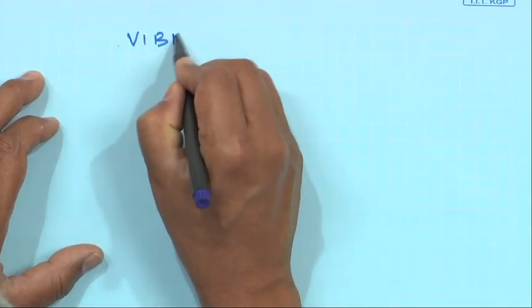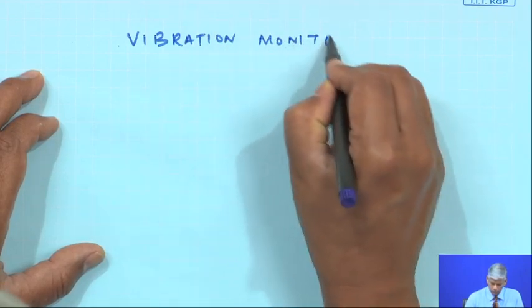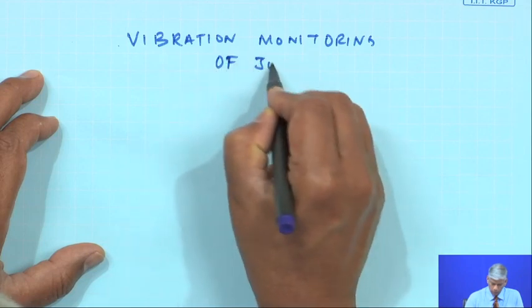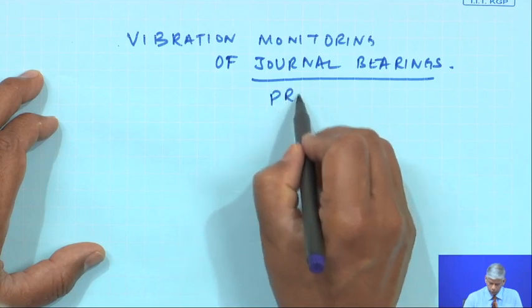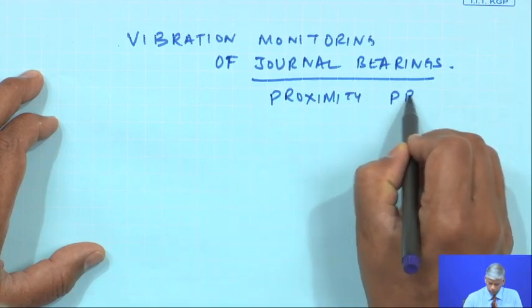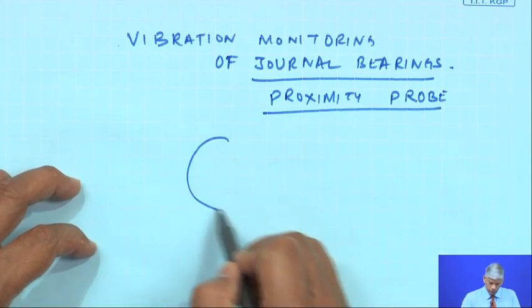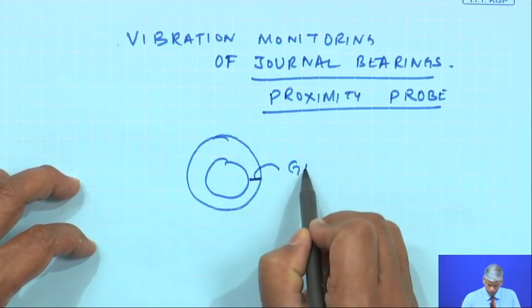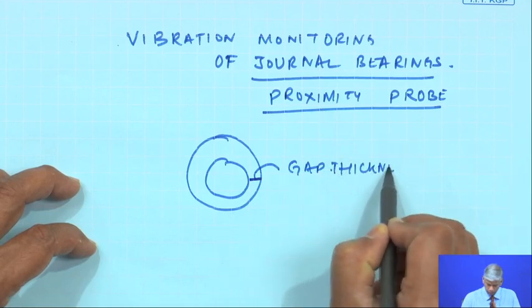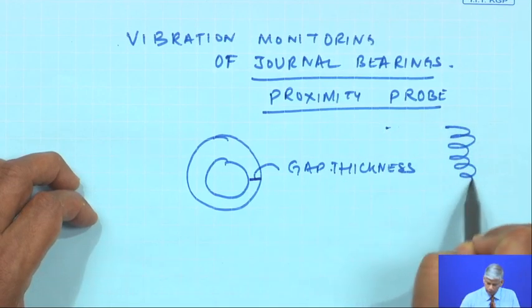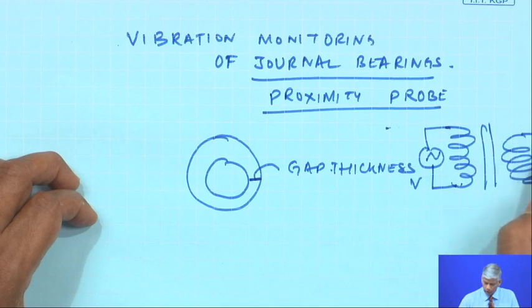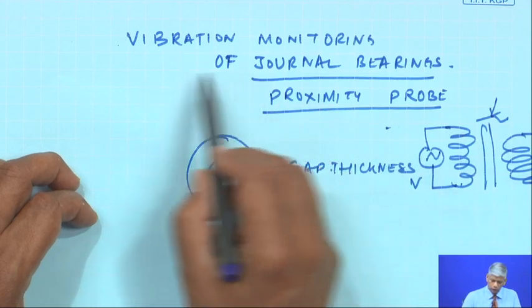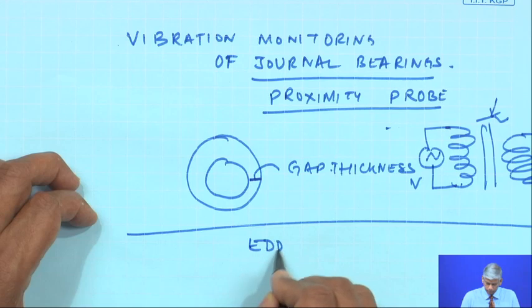When we discussed vibration monitoring, particularly of journal bearings, we used a proximity probe. That probe is dependent on the gap thickness — we give a primary excitation to the probe and get a secondary voltage depending on the magnetic reluctance. But here we are talking about an eddy current probe, which is different.